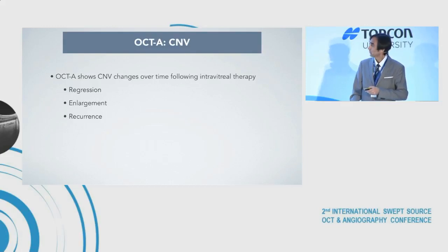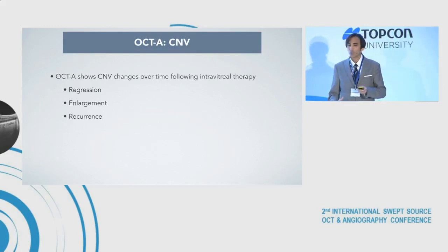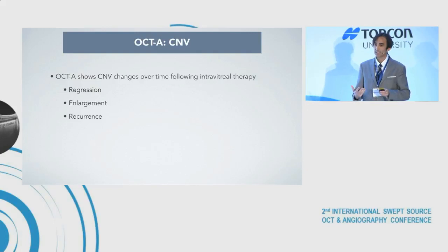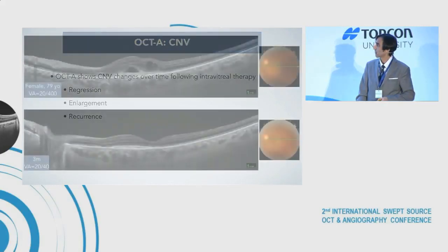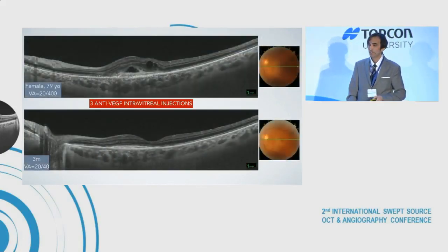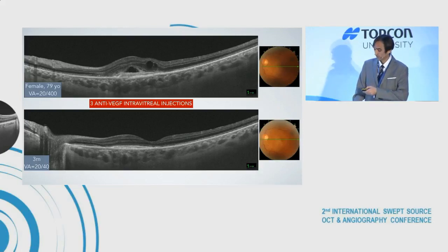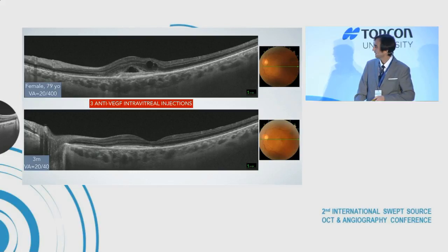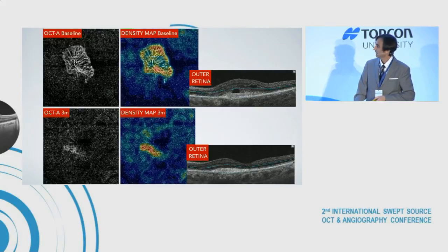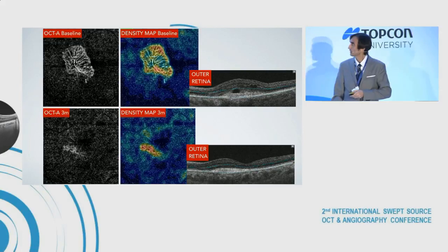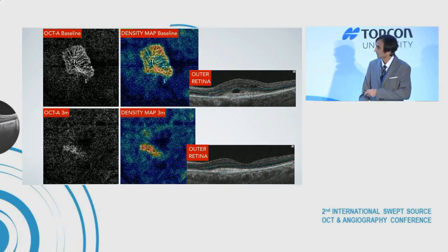OCT angiography shows CNV changes over time following intravitreal therapy. Basically, we can see three different patterns: regression, enlargement, and recurrence. In this case — a patient with a type 2 CNV — after three injections, we can see that no fluid is present on the B-scan, and examining the OCT angiography and the density map, we can see a clear regression of the neovascular membrane.